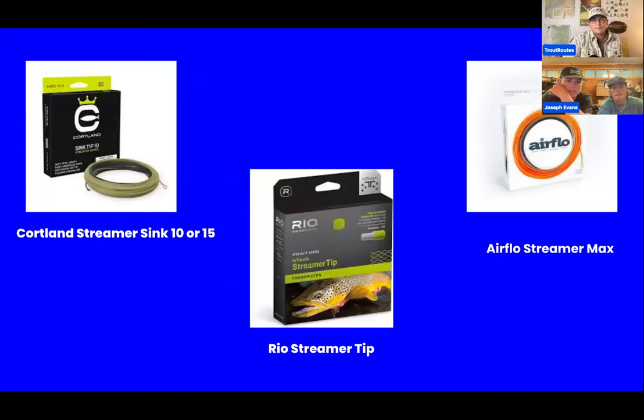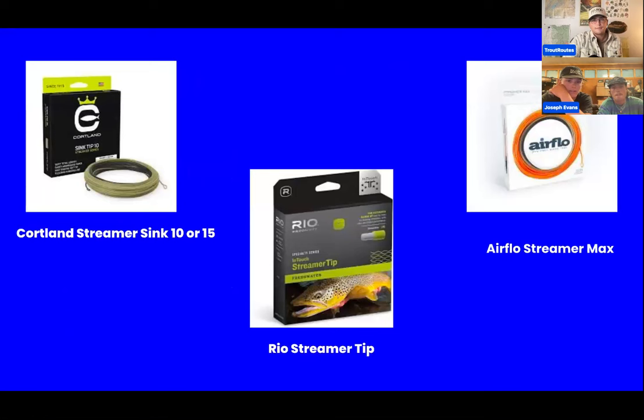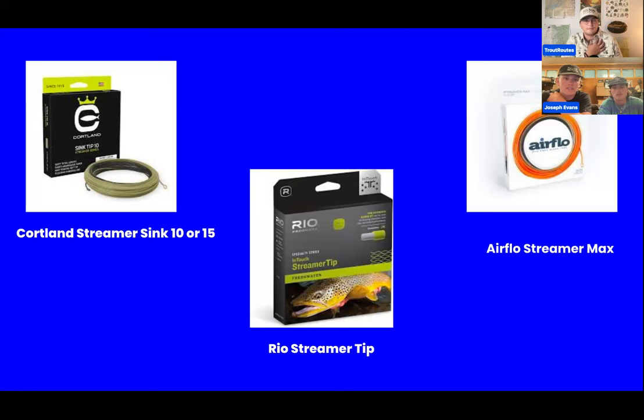For a weighted fly, we like to use a floating line. For unweighted flies, we like sinking lines. Another option for unweighted flies is a trout spey setup — really sexy to have an unweighted fly right at the bottom of the column with the trout spey. The key thing to stress: when fishing a sinking line, your leader should be nowhere near as long as with a floating line. You can utilize both to manipulate depth. We use the Cortland Streamer Sink 10 or 15 a lot — it gets down quick, especially off a boat. For bank fishing, something like the Rio Streamer Tip is a little less heavy.